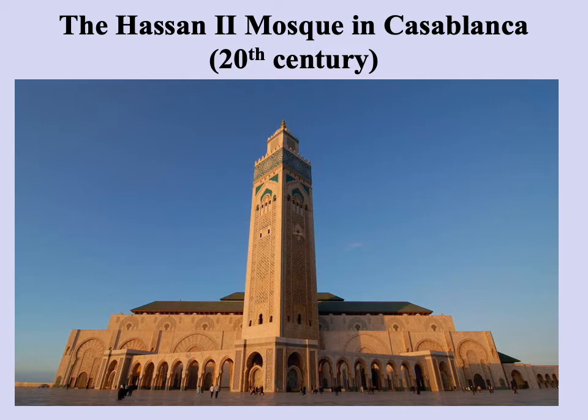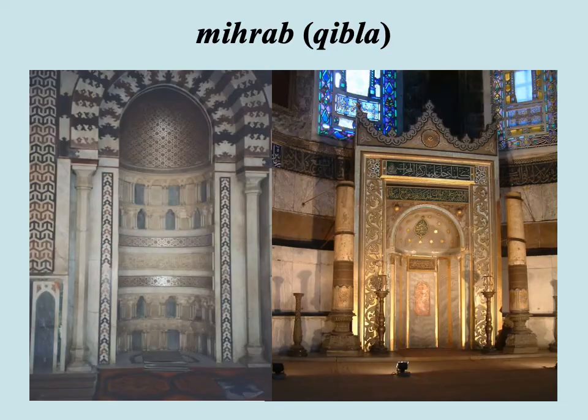Another important feature found in every mosque is the mihrab, which indicates the qibla or direction of prayer. One should always be facing Mecca when praying. Which wall the mihrab is located in depends on what part of the world you're in, but very often, particularly from a Western point of view, we would find it on the Eastern wall.